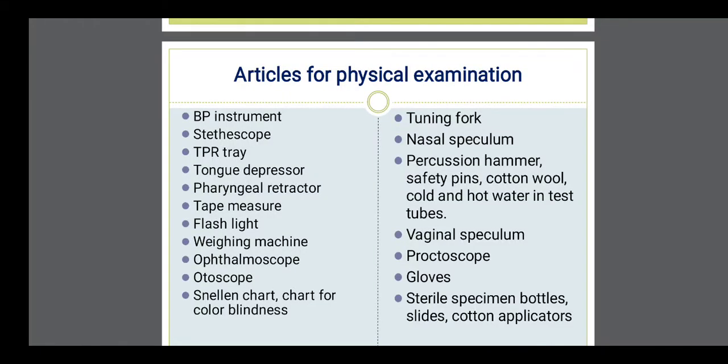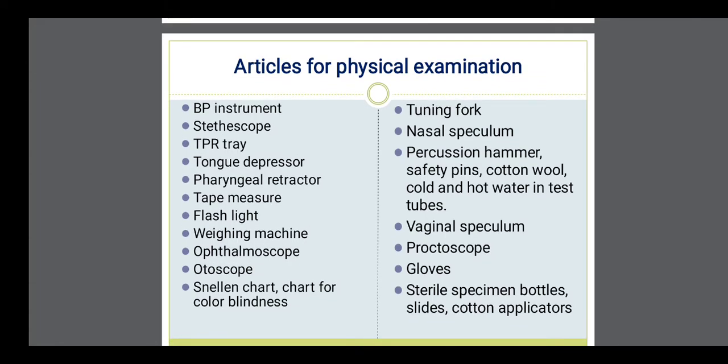Good morning students. To continue with the previous class, I will start today with the articles required for doing a physical examination. In the previous class, I had discussed about the history-taking technique, and the components of history which included present history, past history, family history, nutritional history, socio-economic status, and environmental history. Now, the next step of health assessment is physical examination. For that we require certain articles.